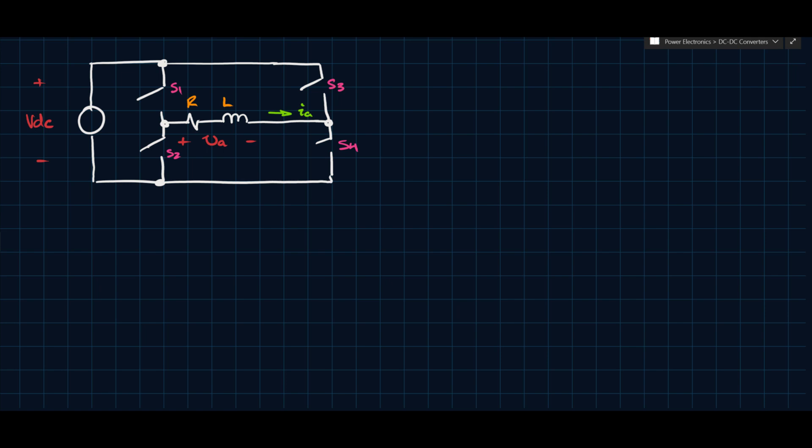Essentially what we have is the exact same bridge converter as we had in the previous case, but we've also added an inductor here. So we see the voltage of the AC terminals is VA, what we're calling it in this case, and we have IA as well.